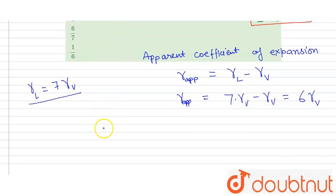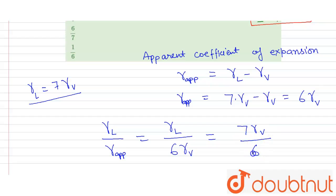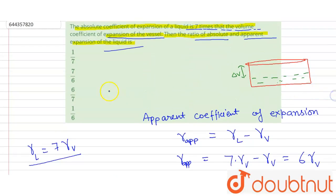But we have to find the ratio of the absolute and the apparent expansion of the liquid. So for the absolute expansion it is gamma_l divided by gamma apparent. So it will be gamma_l divided by gamma apparent, which is six gamma_v. And since gamma_l is seven gamma_v, we get seven gamma_v divided by six gamma_v, which comes out to seven by six. So this is the ratio, and the correct option will be the second one.